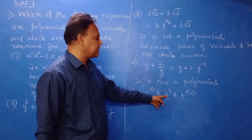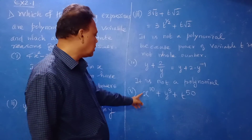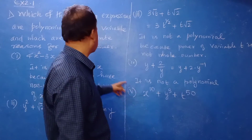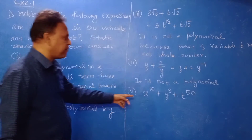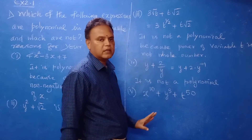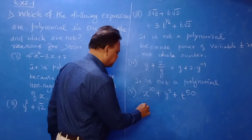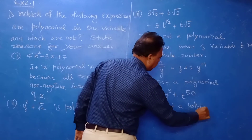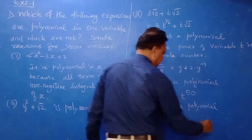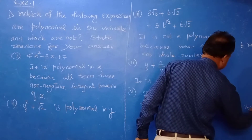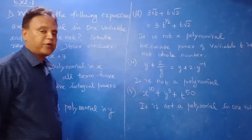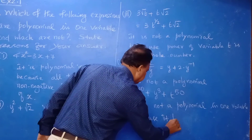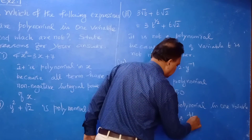Fifth: x power 10 plus y power 3 plus t power 50. All the powers are whole numbers, but it is not a polynomial in one variable — the question asks for one variable, and this expression has three variables: x, y, and t.